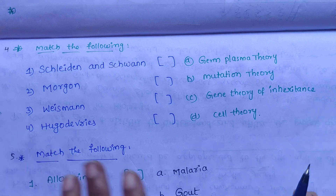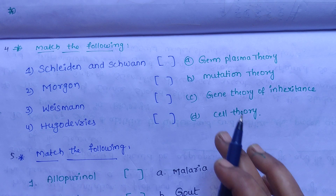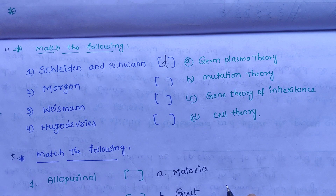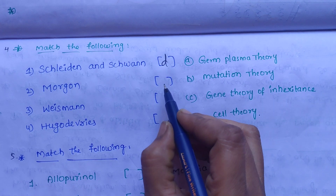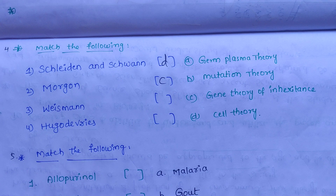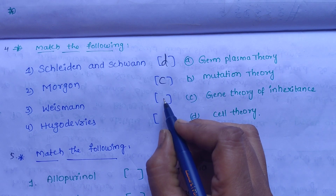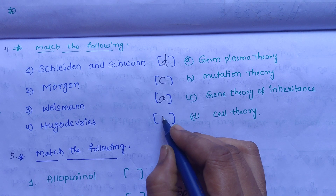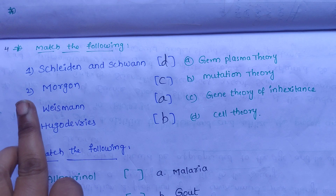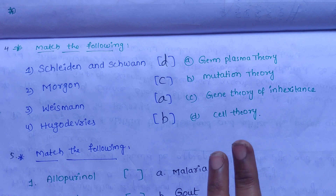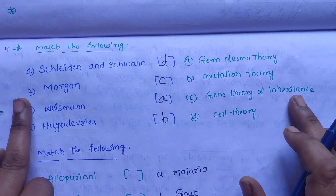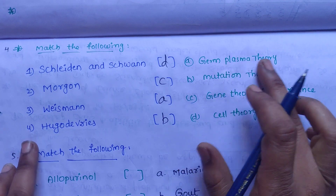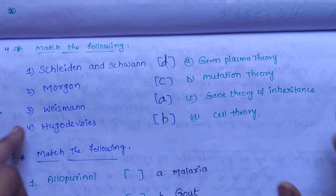The theories to match are: Germ Plasma Theory, Mutation Theory, Gene Theory of Inheritance, and Cell Theory. Schleiden and Schwann proposed the Cell Theory, so the correct option is D. Morgan proposed the Gene Theory of Inheritance, correct option is C. Weismann proposed the Germ Plasma Theory. Hugo de Vries proposed the Mutation Theory.